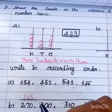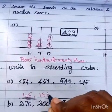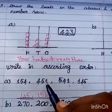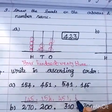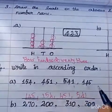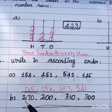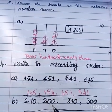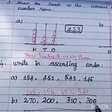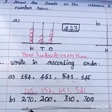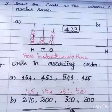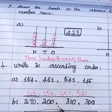Question 4, write in ascending order. The numbers are 154, 451, 541, 145. Smallest number is 145, then 154, 451, 541. Question b, 270, 200, 310, 300. This is the smallest number, which is ascending order from smallest to biggest number.